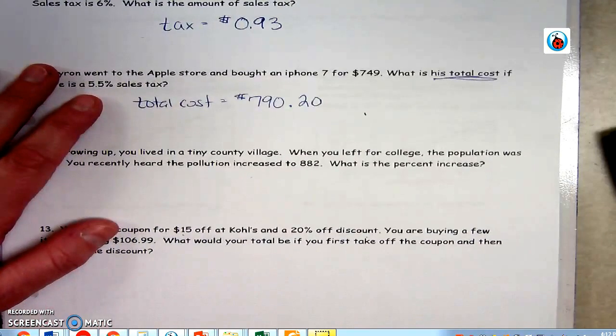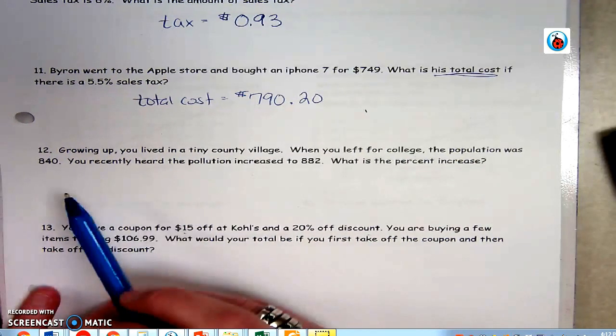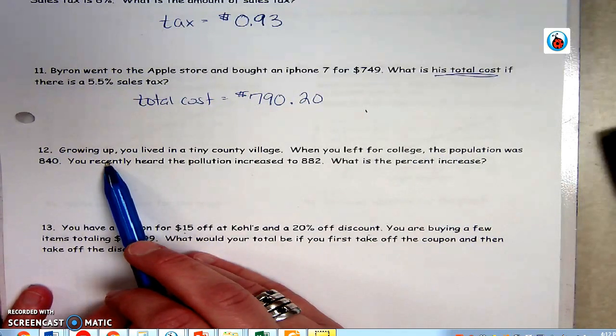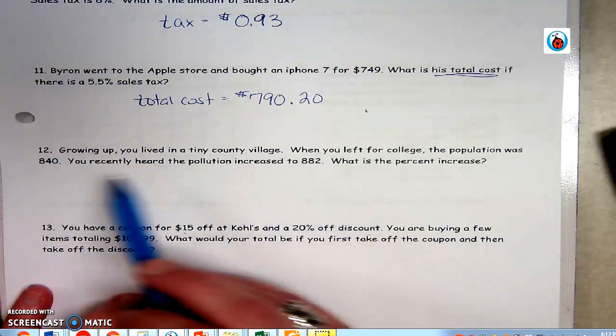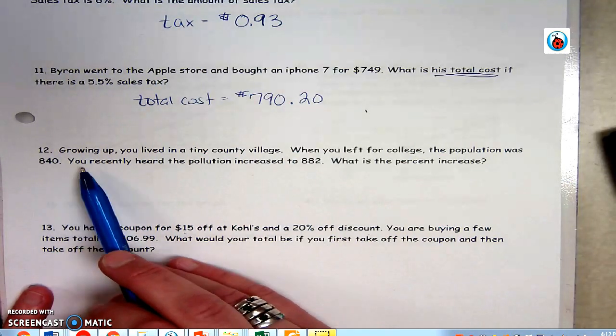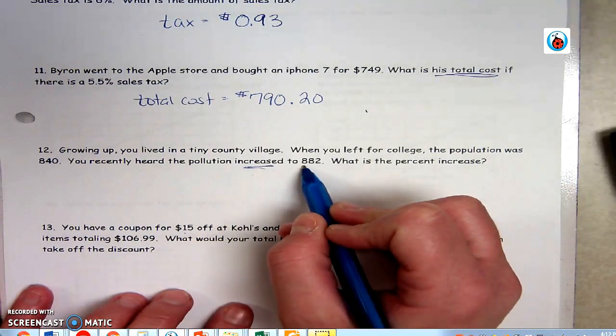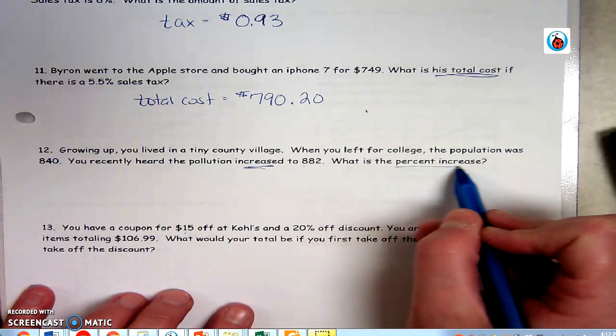All right, here we go. Let's do 12 and 13. They're a little bit harder. In number 12, you lived in a village growing up, and the village was small and had a population of 840 people. So you recently heard the population increased to 882. What is the percent increase?